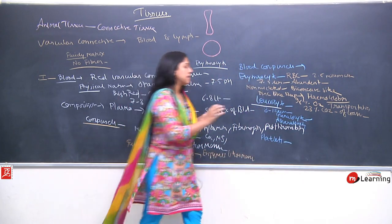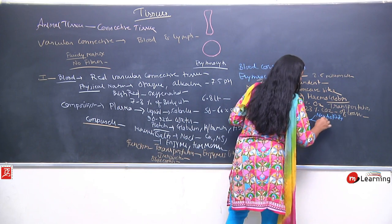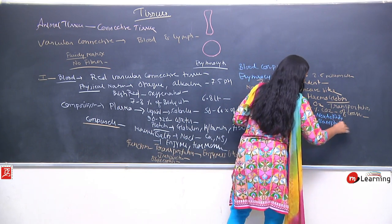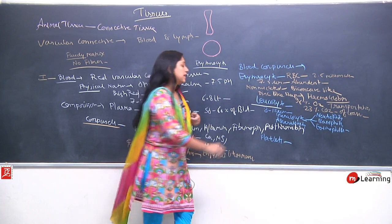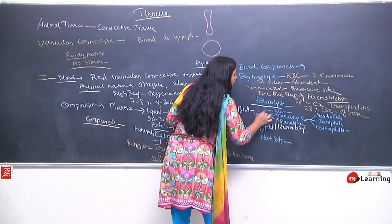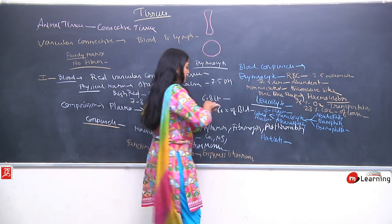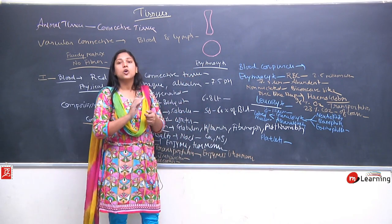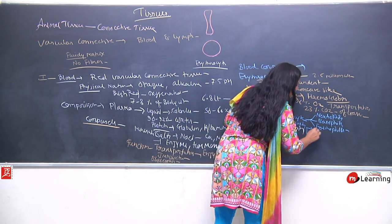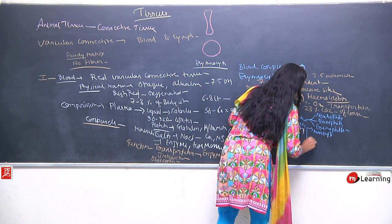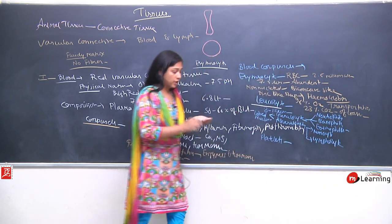Granulocytes are further of three types: neutrophils, basophils, and eosinophils. Granulocytes have a lobed nucleus. Agranulocytes are of two types: monocytes, which are smaller in size, and lymphocytes, which are larger in size with a very large nucleus.